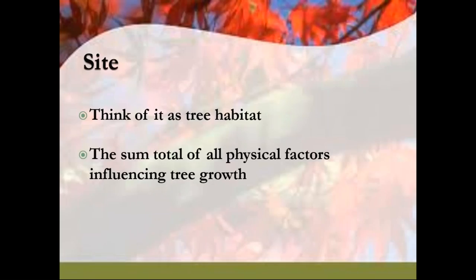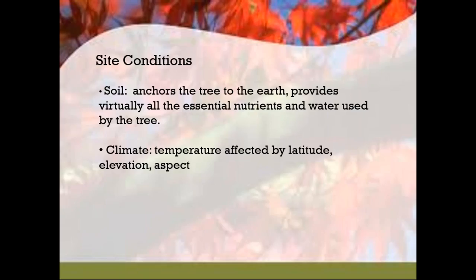Site is the habitat for the tree—the sum total of all physical factors influencing its growth. Soil is the base; we think of it as the stage. If we can protect the stage, we can protect the forest. Even though the forest may change over time because of climate, if we have healthy soil conditions we will be able to have a healthy forest. Climate is affected by latitude, elevation, and aspect. Vermont has a varied topographic landscape, giving us areas that will remain conducive to current species well into the future, along with lots of habitat niches.